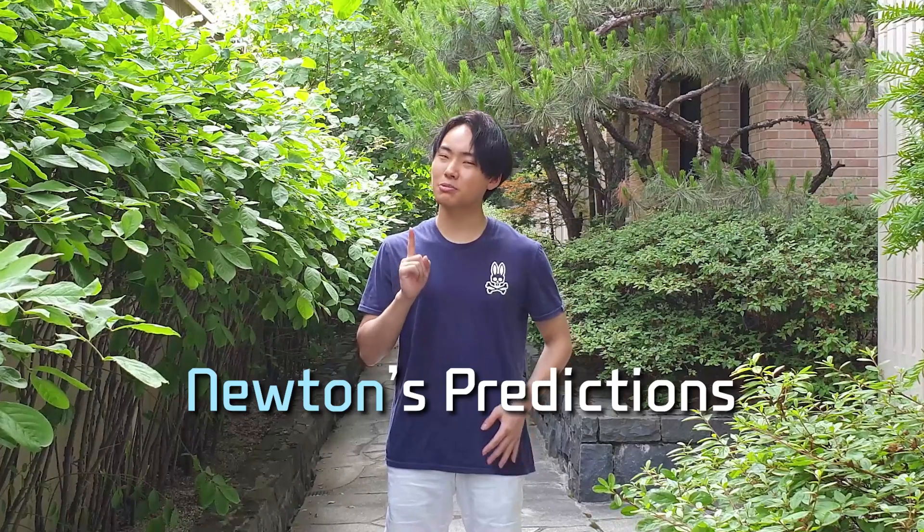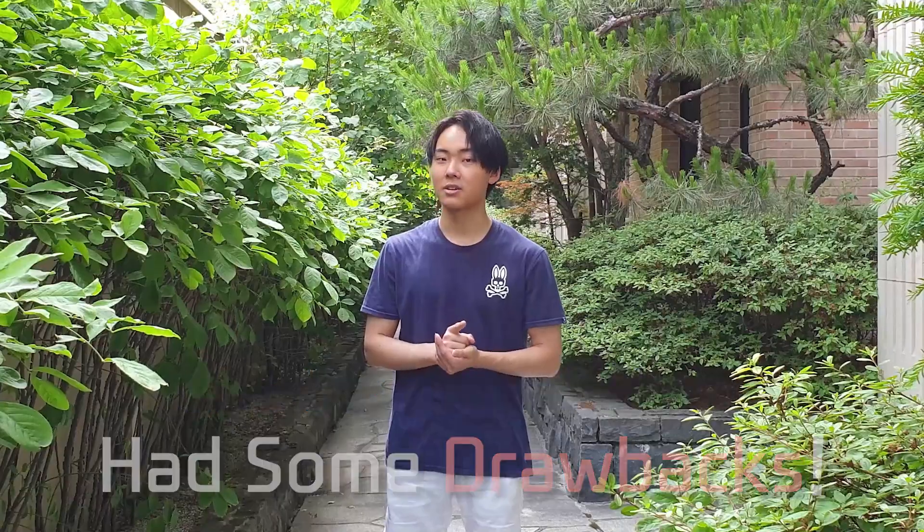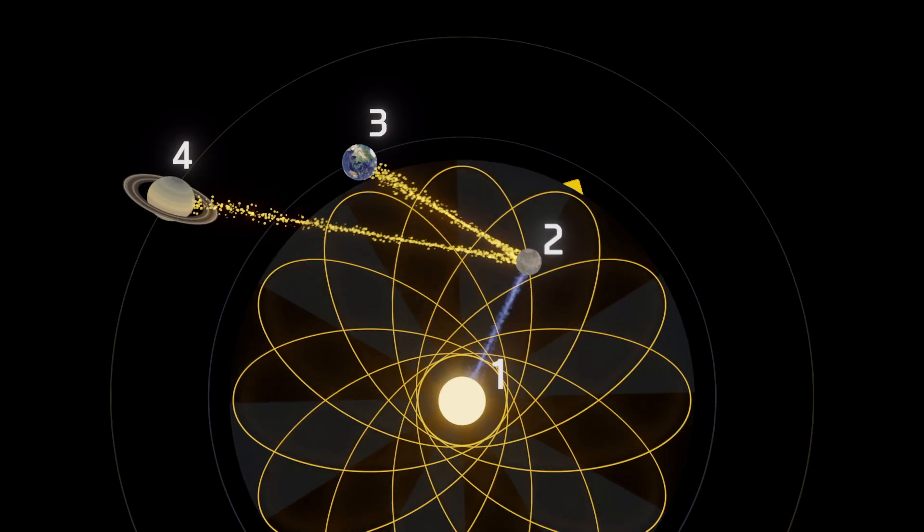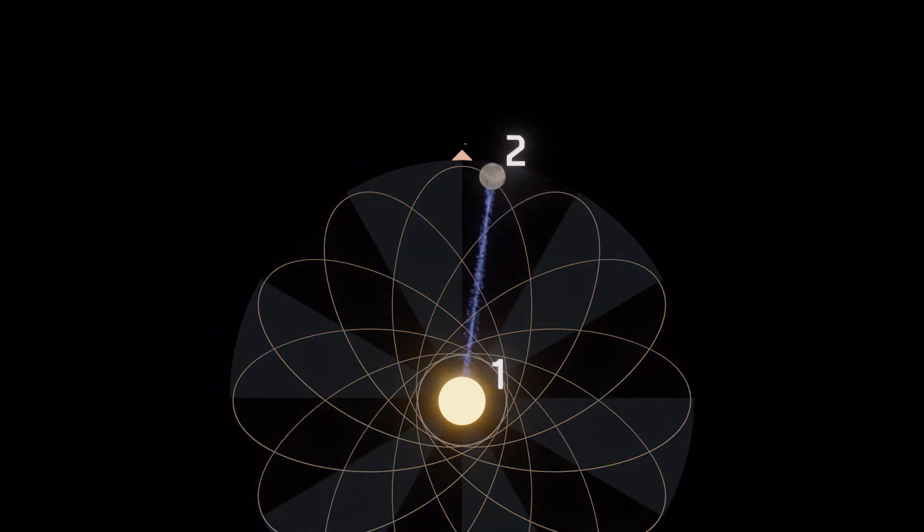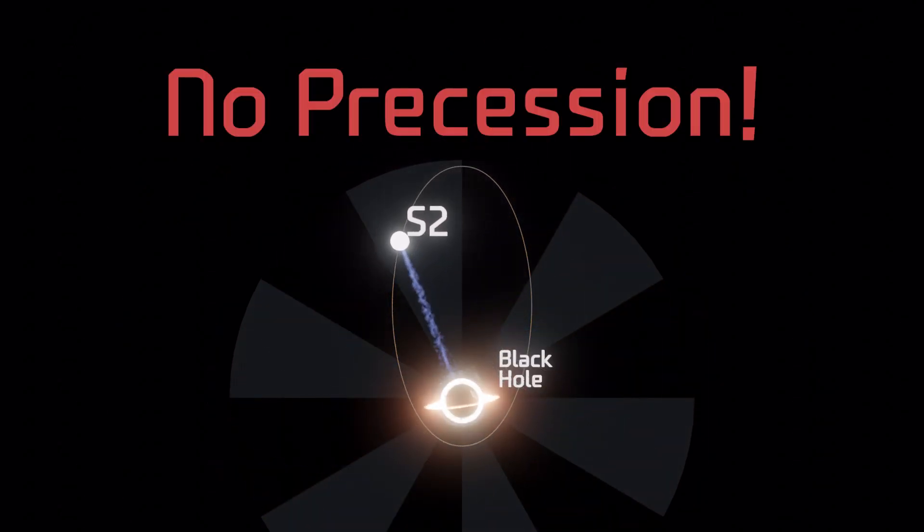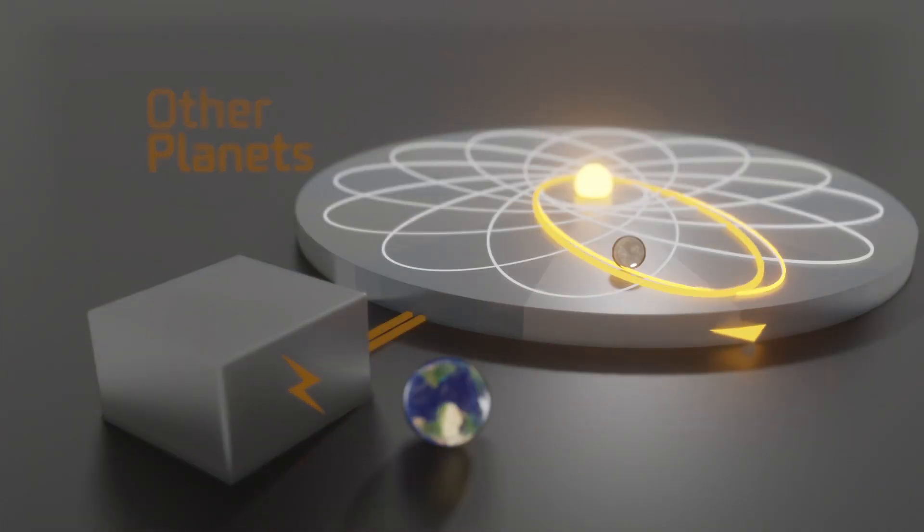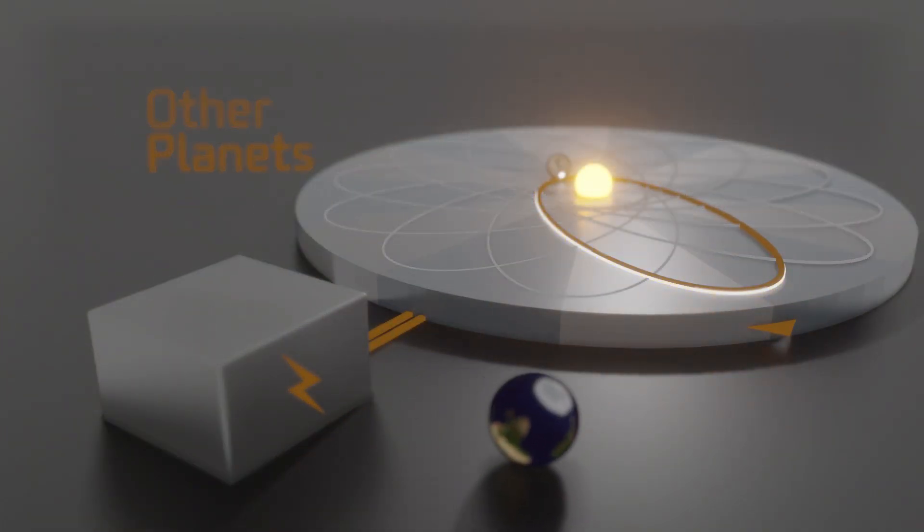But Newton's prediction had some drawbacks. Not only were his Mercury calculations inaccurate, but if with only two bodies, like S2 and the black hole, there would be no precession. It's like if the merry-go-round stops, and you can only draw the same ellipse over and over.